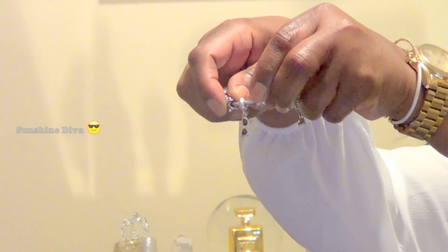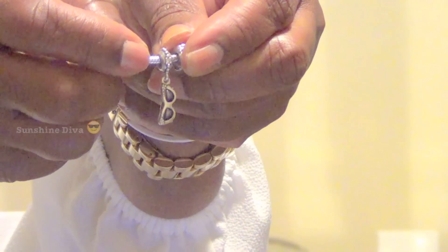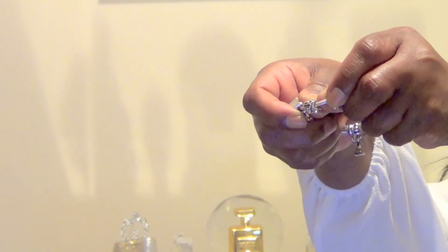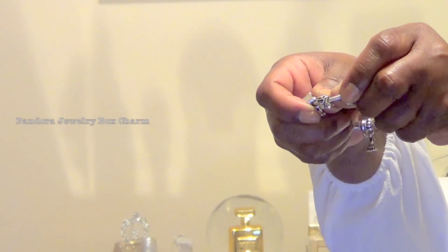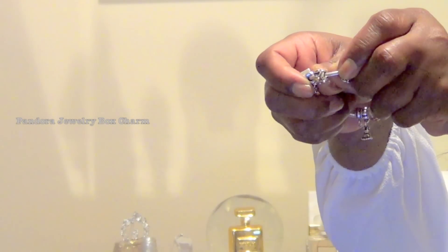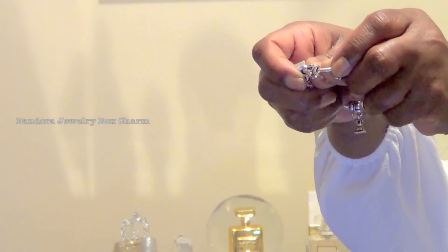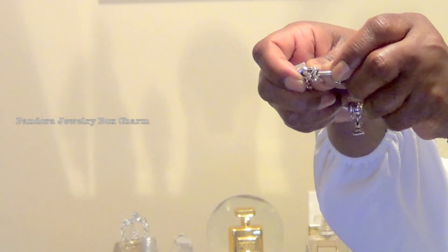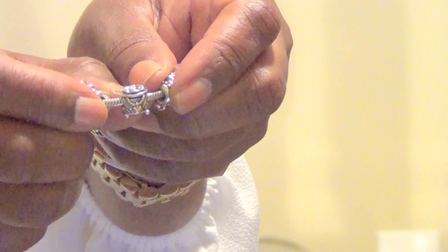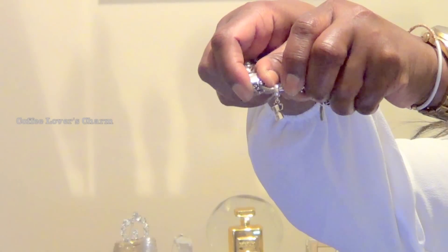Sunshine diva. This is the Pandora box charm with silver and 14 karat gold. It's a beautiful jewelry box with a necklace hanging on the outside with a little 14 karat gold charm on the end of it. This is the dangle coffee lover's charm.